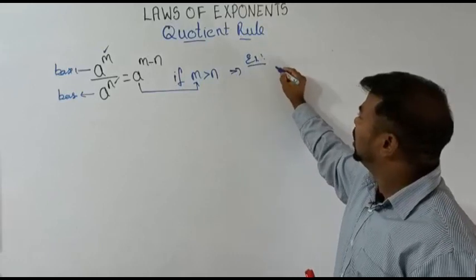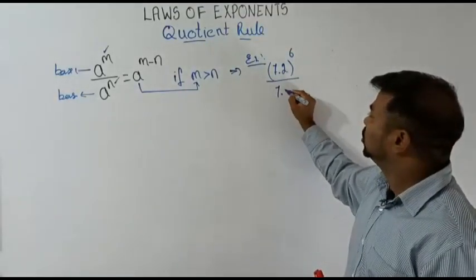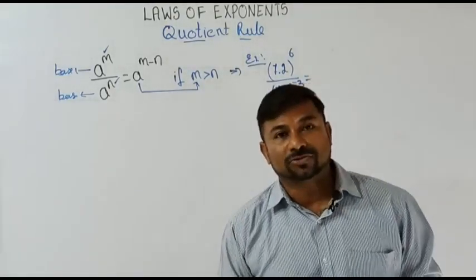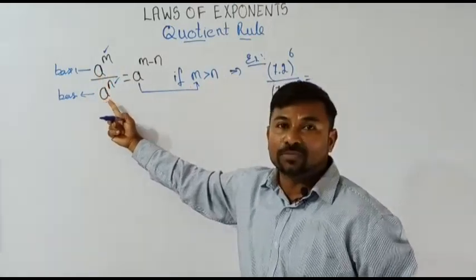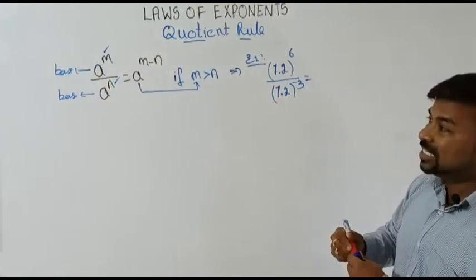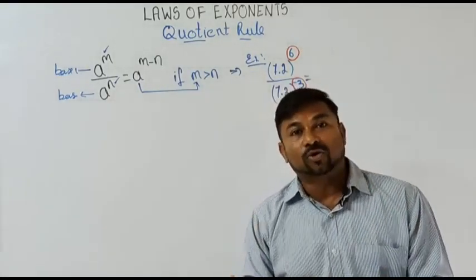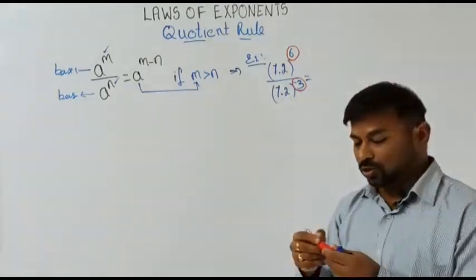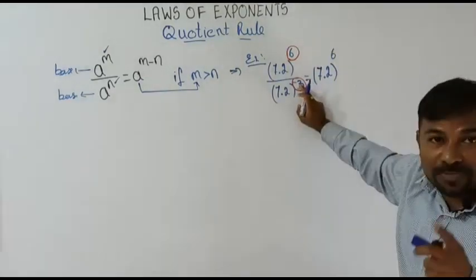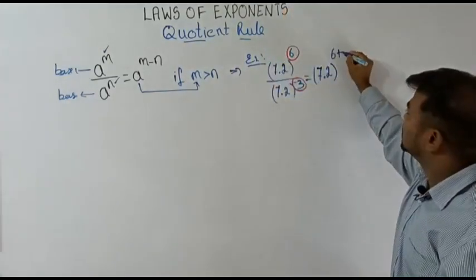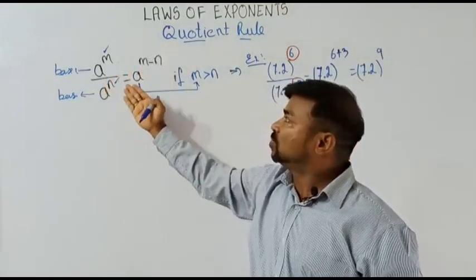The example is: 7.2 to the power 6, whole divided by 7.2 to the power minus 3. Here 7.2 is the base on top, and 7.2 is also the base on the bottom. The top power is 6, that is m, and minus 3 is n. Since minus 3 is the smaller one, it reaches the top and becomes plus 3, giving us 7.2 to the power of 9.